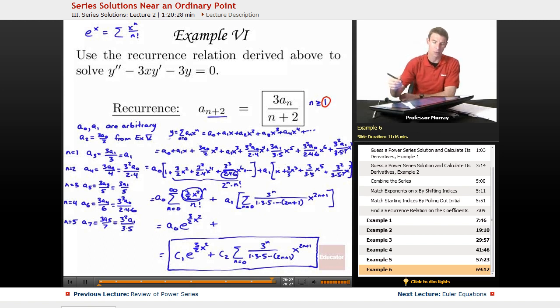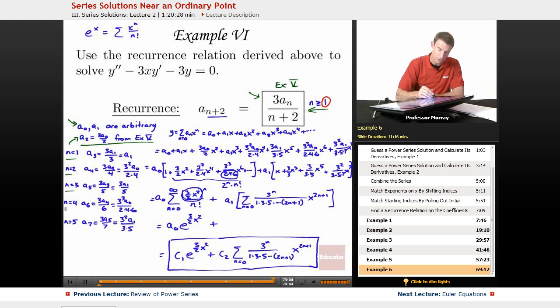Let me recap how we derived that. We started with this recurrence relation from Example 5. We also had this expression about A2 in terms of A0 from Example 5. Nothing told us what A0 and A1 were, so we had to leave those arbitrary. Then we figured out A2 in terms of A0, and plugging in different values of n into this recurrence relation, n equals 1, 2, 3, and 4, gave us the higher coefficients in terms of the lower ones.